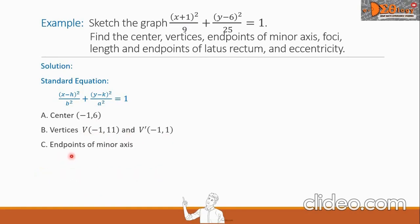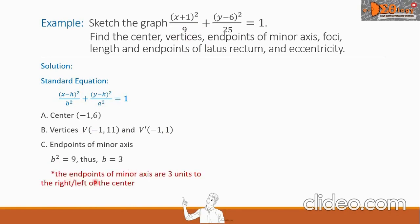Next are the endpoints of the minor axis. The other denominator is b², which equals 9. We find b by taking the square root, so b = 3. This means the endpoints of the minor axis are 3 units to the right or left of the center. So the coordinates of the endpoints are B: (2, 6) and B': (−4, 6).